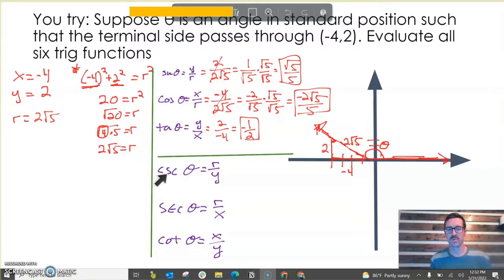What you might be tempted to do is just take the reciprocal of √5/5, which would be 5/√5, but then you'd have to rationalize again. Instead, let's take the unsimplified form, 1/√5. If I take the reciprocal of that, it's just √5. So cosecant theta equals √5.